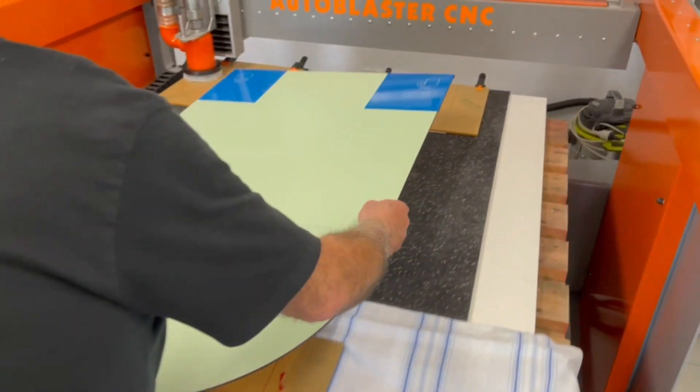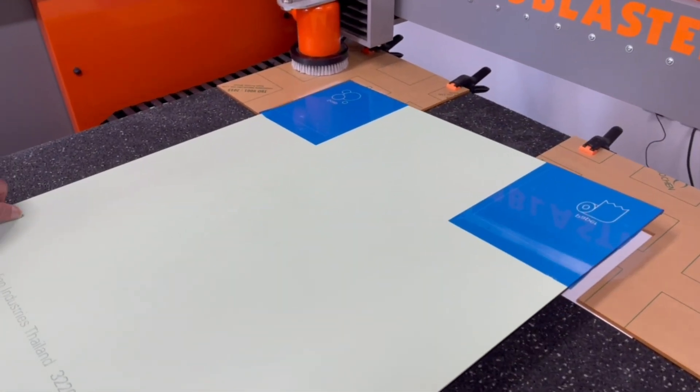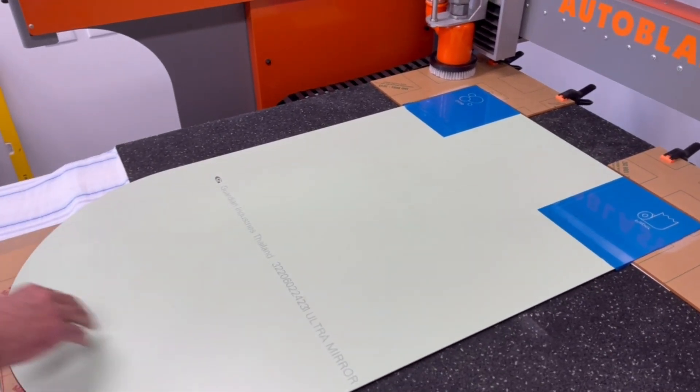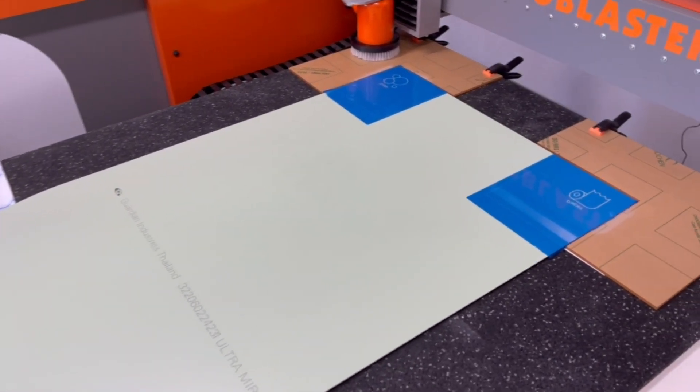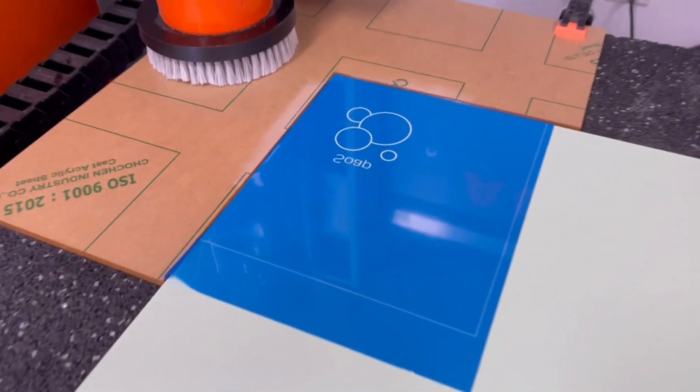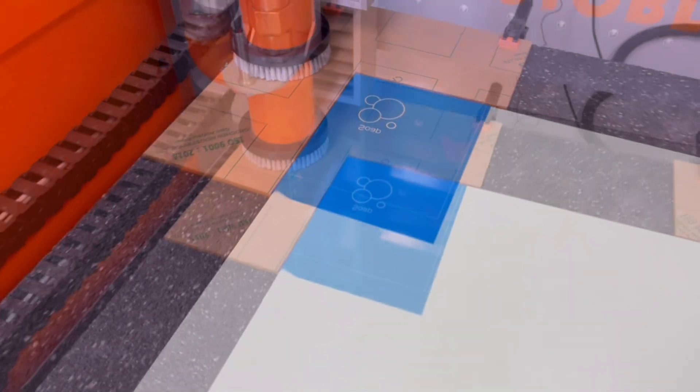SR3000 and CNC autoblaster: this powerful combination streamlines the workflow, reduces dust and cleanup, and enables the creation of intricate designs with ease, making it an ideal choice for professionals in the engraving industry.